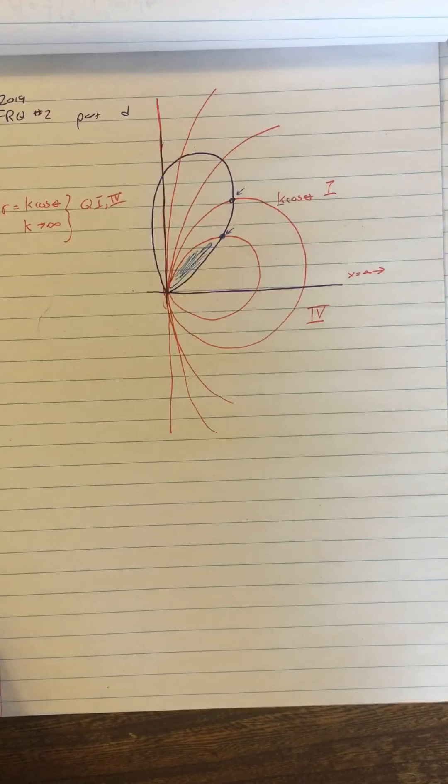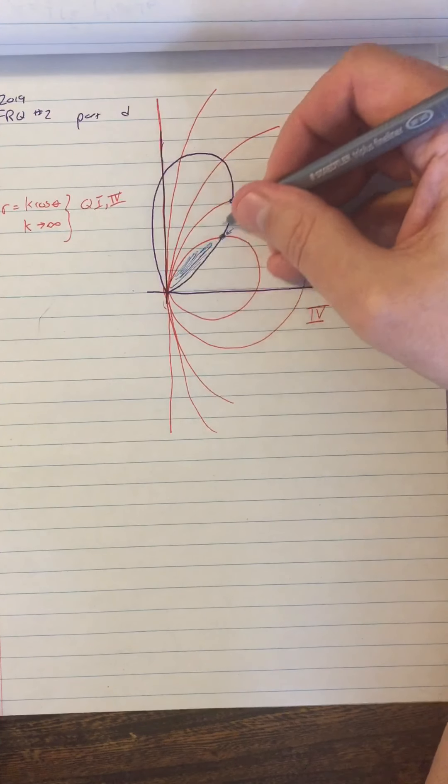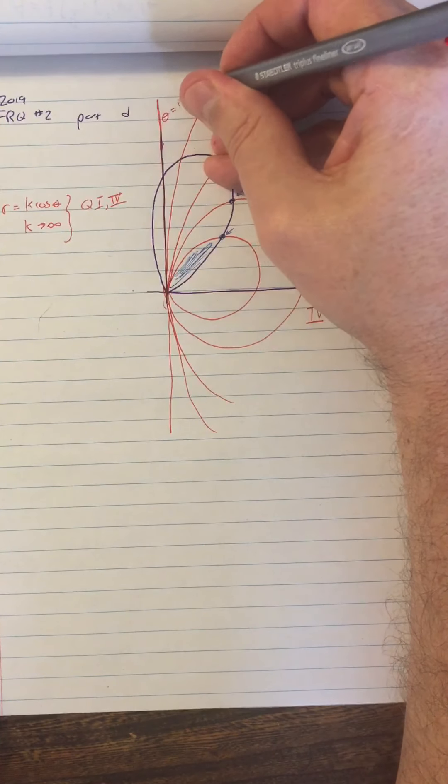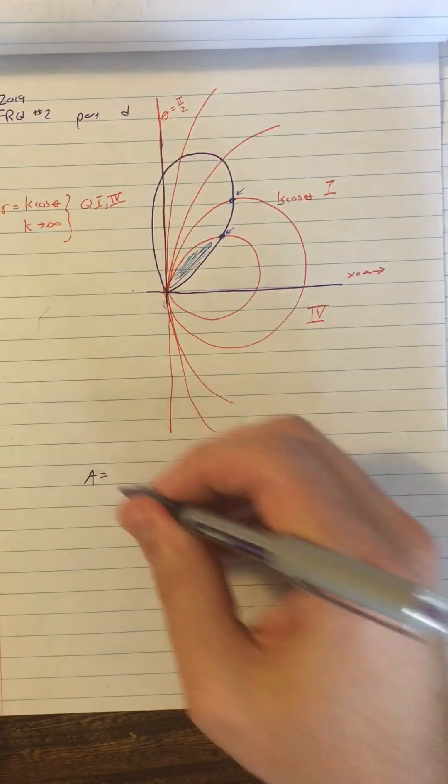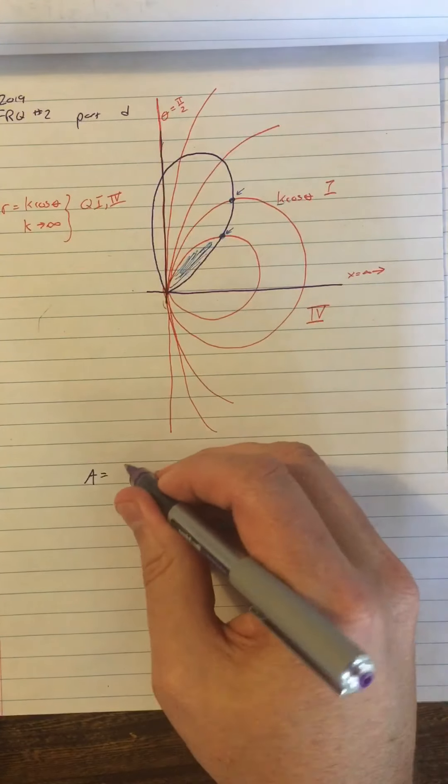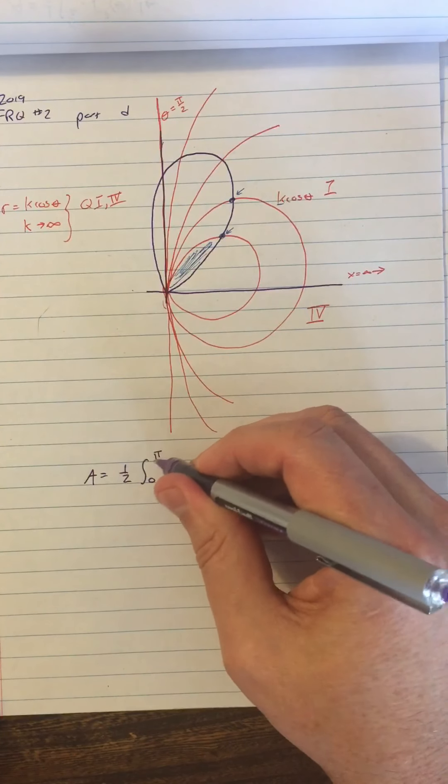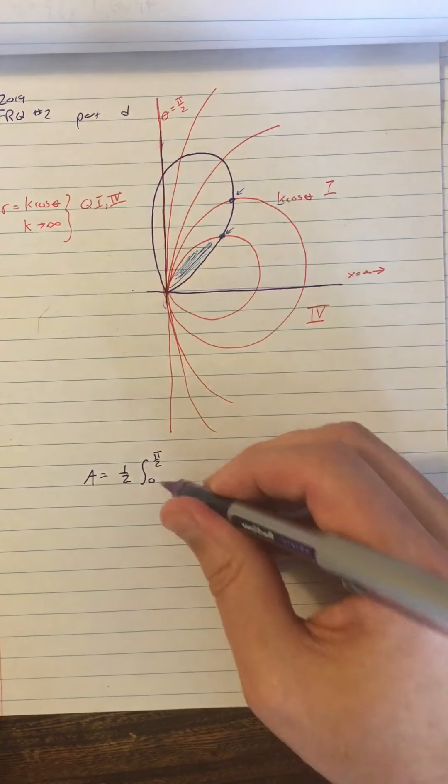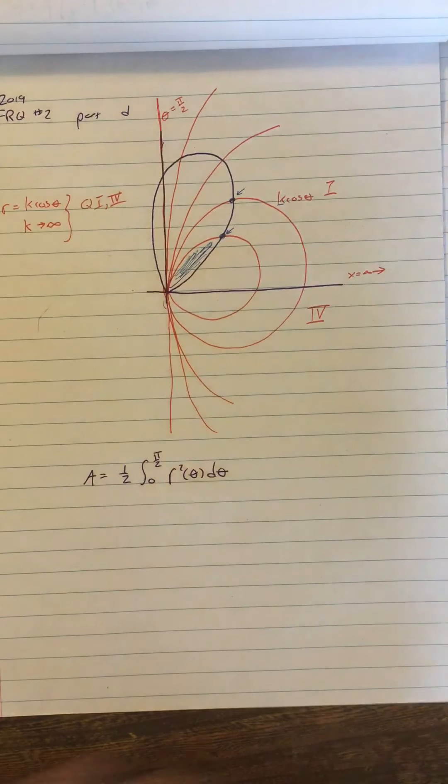So what that tells you is that in order to find the area, all you really have to do is say, all right, well, when I get that infinite circle, I'm really just going from theta equals zero up to theta equals pi over two. So I'll do that same area equation I've done for this whole problem, except instead of doing the integral from zero to square root pi, I'll do integral from zero to pi over two of r squared theta d theta.